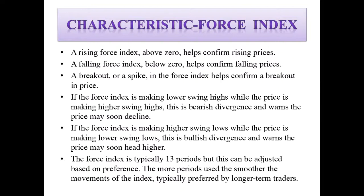If the Force Index is making higher swing lows while the price is making lower swing lows, this is a bullish divergence and warns that the price may soon head higher. The Force Index is typically 13 periods, but this can be adjusted based on preference. The more periods used, the smoother the movements of the index, typically preferred by longer-term traders.